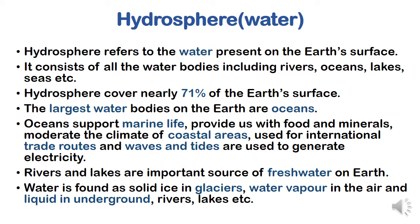Oceans moderate the climate of coastal areas. Coastal areas are the land areas near the ocean. For example in India, the north areas where there is no ocean have higher temperatures, while coastal areas have moderate temperature — neither too hot nor too cold — throughout the year, because of the ocean.